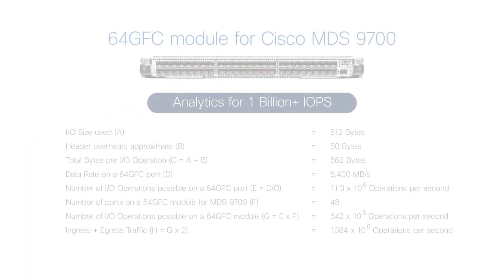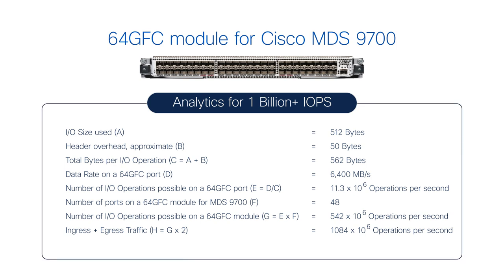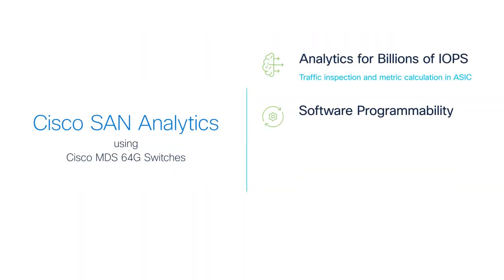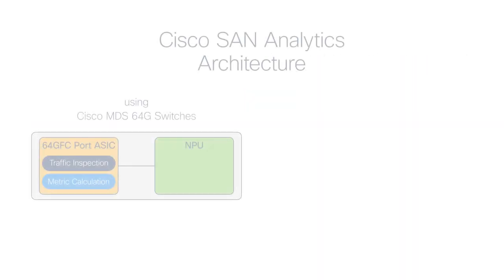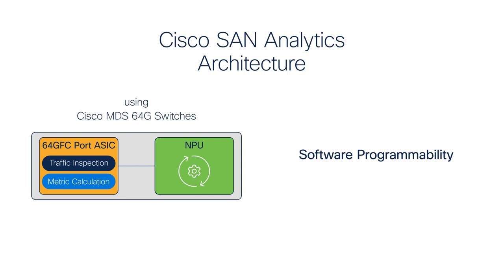This gives visibility into any I/O transactions that flow through the switch ports. If you're wondering where the number of a billion IOPS comes from, I'll let you run that calculation. Moving on to the second benefit: although traffic inspection and metric calculation are natively done in the port ASIC, the software-programmable NPU continues to exist.